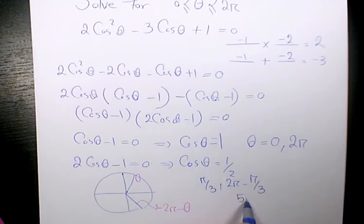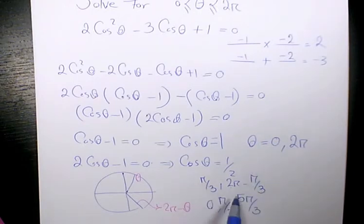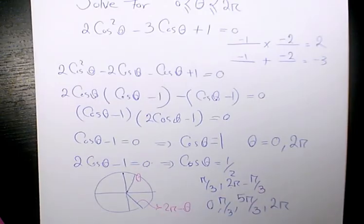That equals 5 pi over 3. So the answers are 0, pi over 3, 5 pi over 3, and 2 pi. We have these four different solutions to this trigonometric equation. I hope you enjoyed this video.